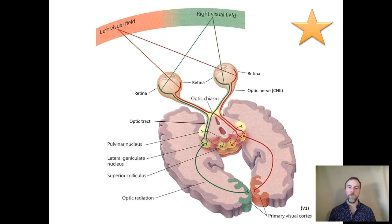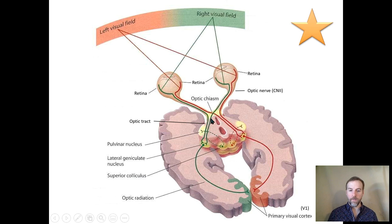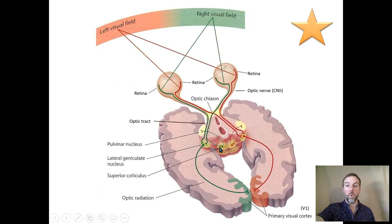Last class we were looking at the neuroanatomy of the visual system and the division between the cortical pathway and the subcortical pathway. To review quickly, both pathways begin with the eyes at the retina, but after the optic chiasm, both pathways travel down the optic tract. The subcortical pathway takes a detour down to the superior colliculus and then up to the pulvinar nucleus — structures in the subcortex, hence the subcortical pathway.